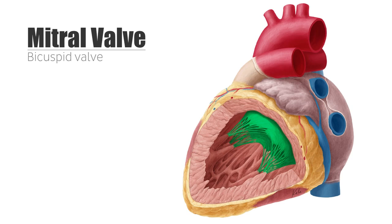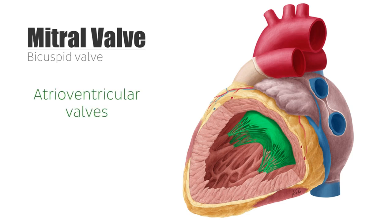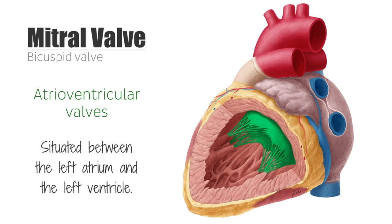The mitral valve is one of two atrioventricular valves. Its name comes from the fact that it is comprised of two cusps, which together look like a bishop's hat called a mitre. It is situated between the left atrium and the left ventricle.